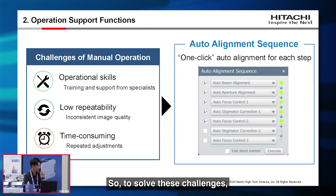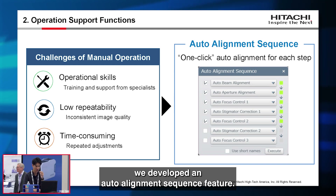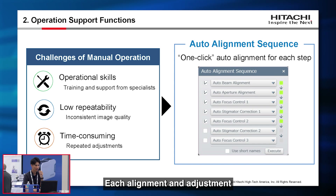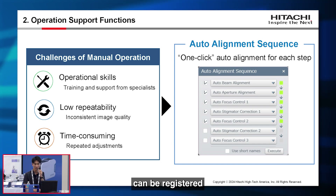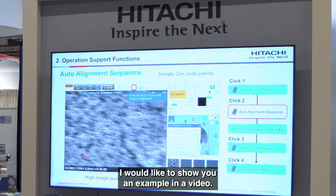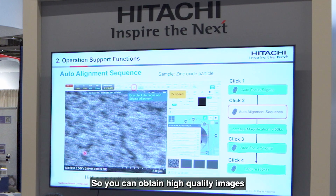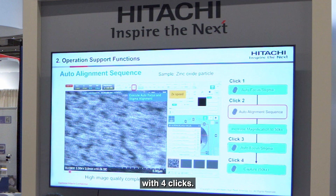To solve these challenges, we developed an auto alignment sequence feature. Each alignment and adjustment can be registered and executes all steps with one click. I would like to show you an example in a video — you can obtain high-quality images with four clicks.